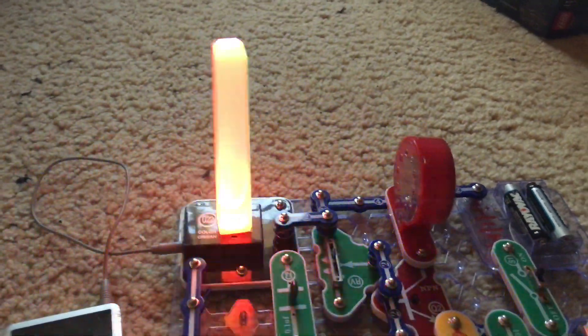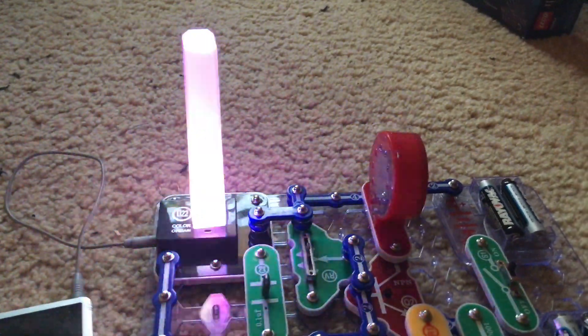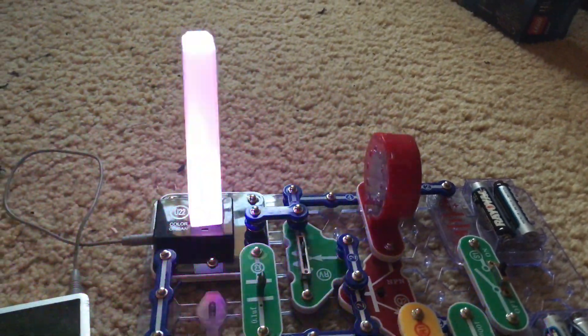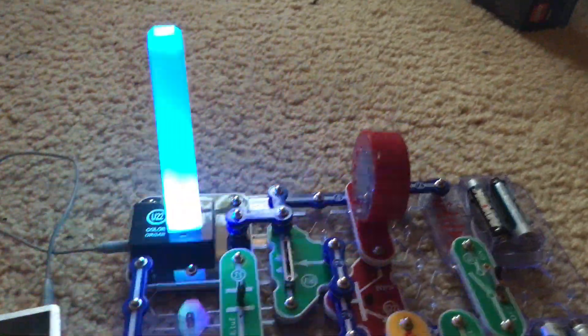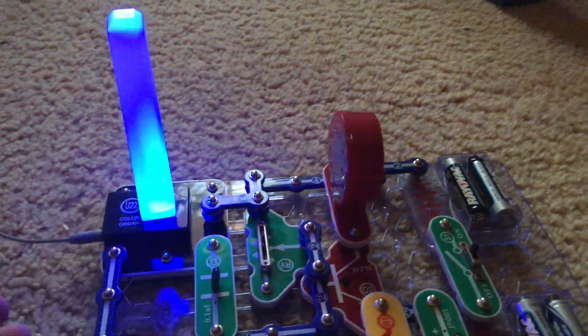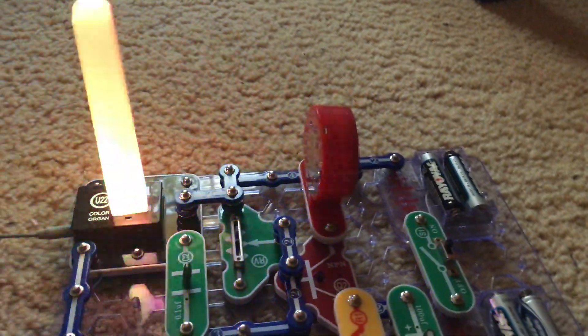Look how quickly the LED on the color organ changes colors. It's dancing in sync to the music. And they want you to compare fast and slow songs as well as different volume levels.